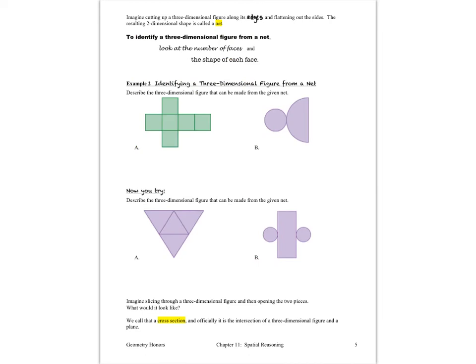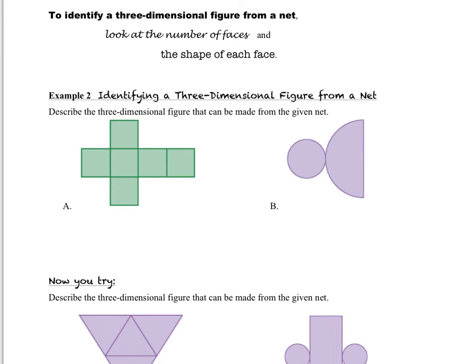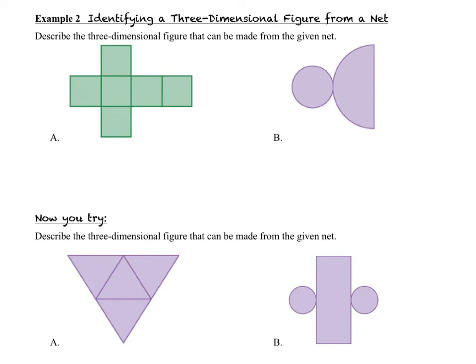You probably have heard the term net that indicates what the two dimensional version of the three dimensional shape would look like if you cut the three dimensional shape along its edges and flattened it out. To figure out what three dimensional shape a net would make, take a look at the number of faces and the shape of each of the faces and try to imagine or visualize exactly what shape would take place as you folded it back up or tried to turn it back into a 3D figure. So example number two says identifying a three dimensional figure from a net and we want to describe the three dimensional figure that can be made from the given net. We take a look at question A and it's got six different faces. They are all squares so we can easily imagine that this net would create a cube.